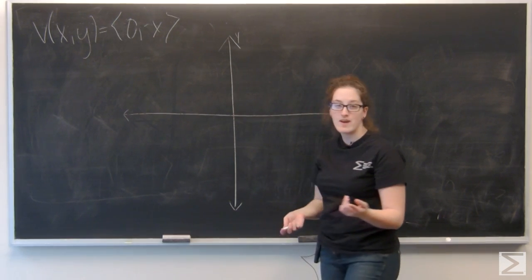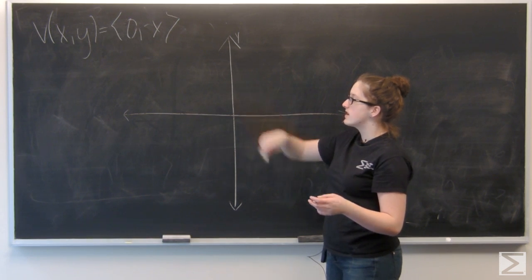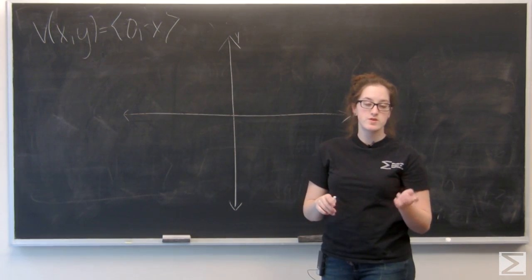So for this question, I'm asked to graph six vectors in the field v of x, y equals 0, negative x.